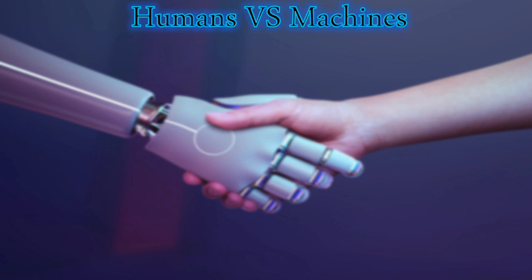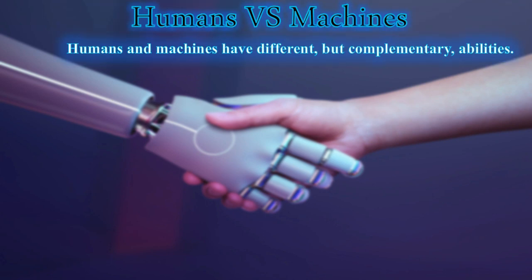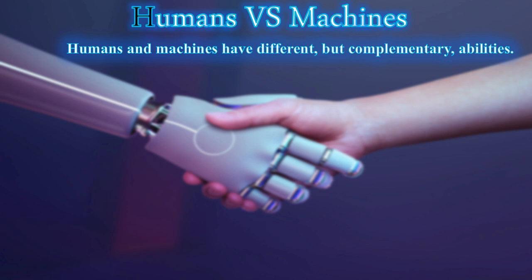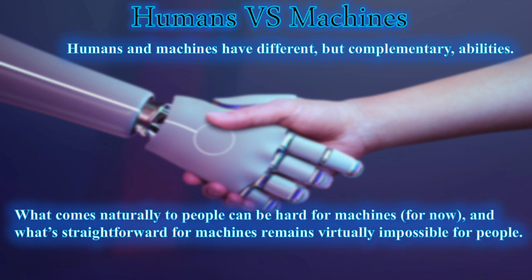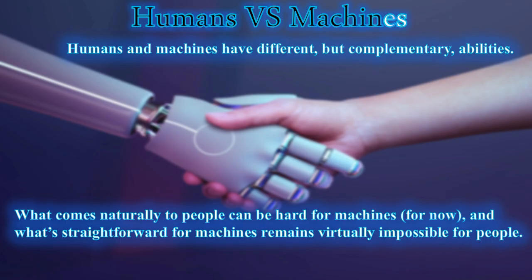Humans and machines have different but complementary abilities. Human beings have abilities that machines don't have, and machines have abilities that we don't have. What comes naturally to people can be hard for machines — at least for now, though this may change as AI improves. And what's straightforward for machines remains virtually impossible for people.